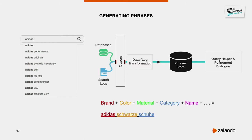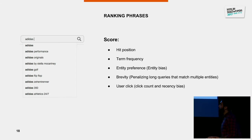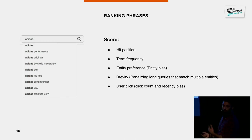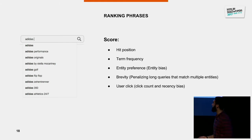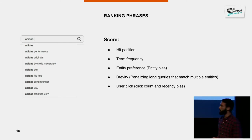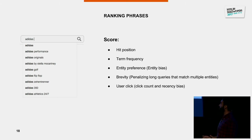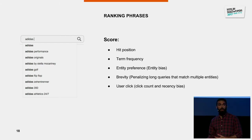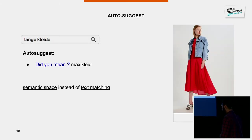The scoring function for suggestions relies on hit position — whether the typed word appears first or second in the suggestion — and term frequency. Entity reference also matters: if someone starts typing a brand name, we prefer brands over colors. Gravity keeps the suggestion proportionate to the input — you can't enter one or two words and get a six or seven word suggestion. Finally, user clicks have a time-decay function where recent clicks are more valuable than older ones.